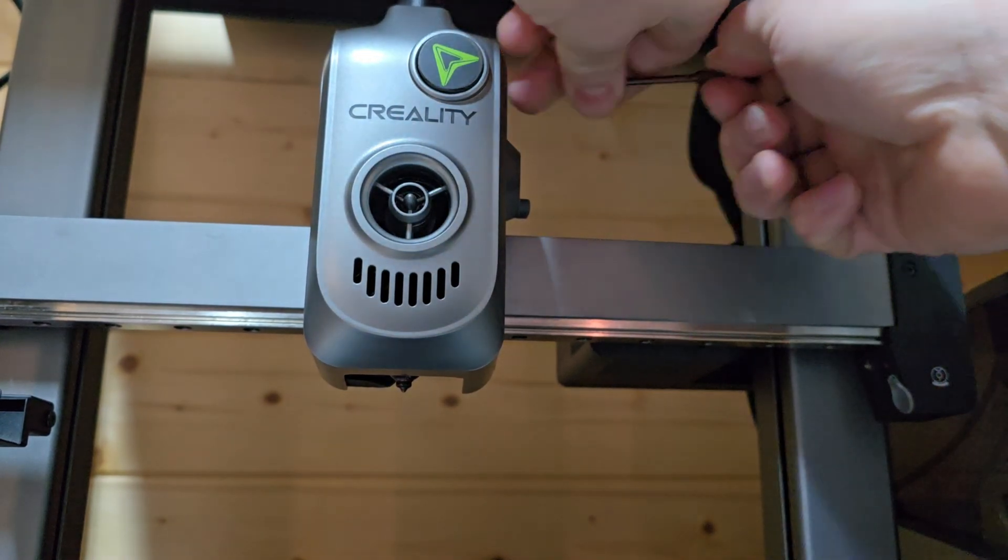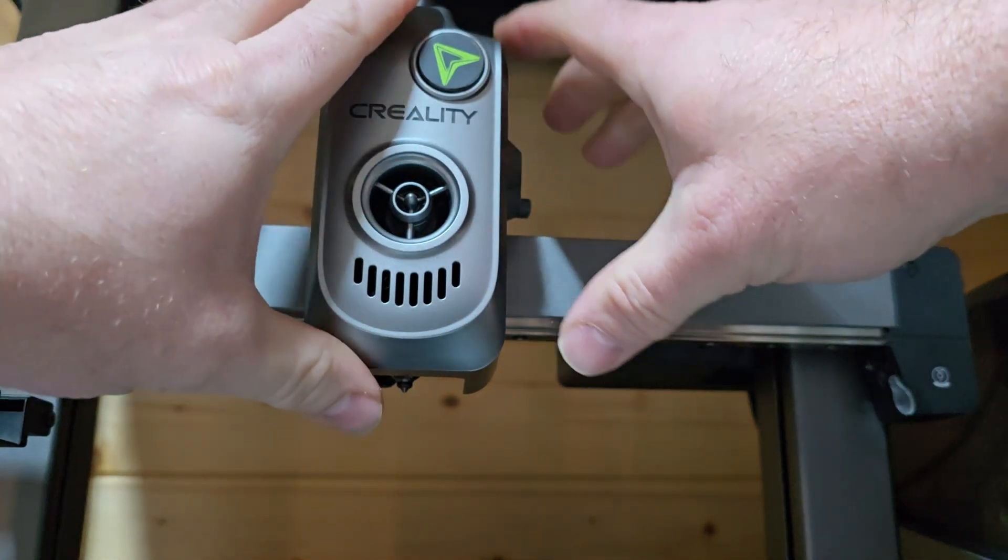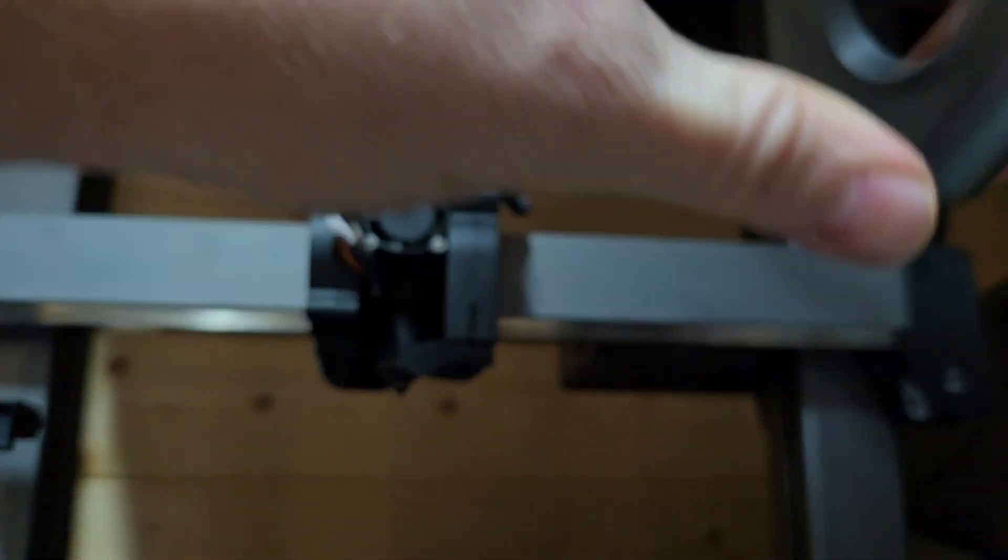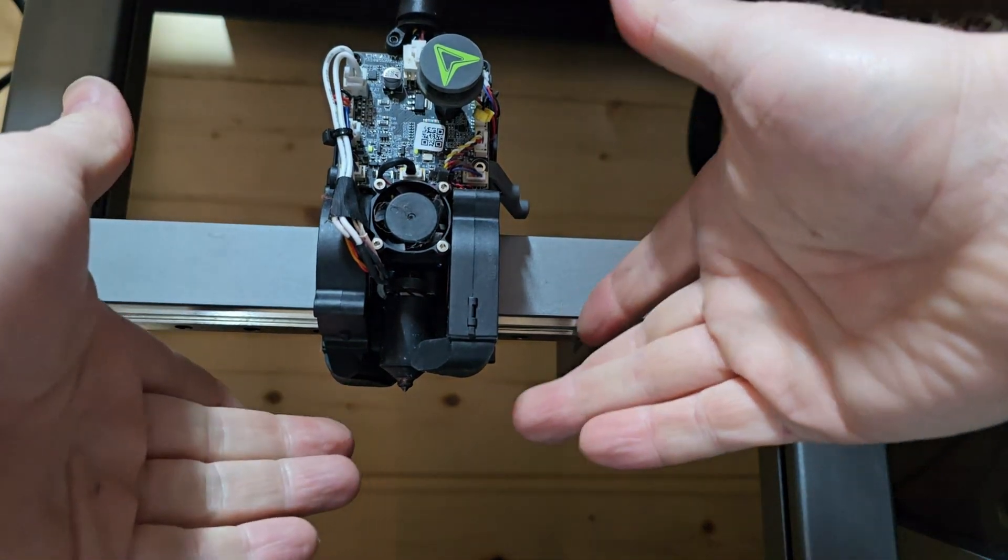Then we'll take a look at what type of nozzle this uses. It is the tri-metal nozzle, but what it is in comparison to the K2 Plus or the Ender 3 V3 Plus and the K1 Max with the quick swap nozzle.